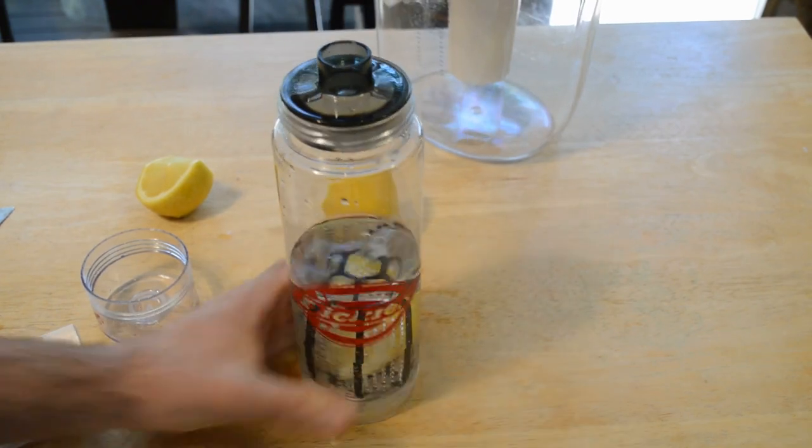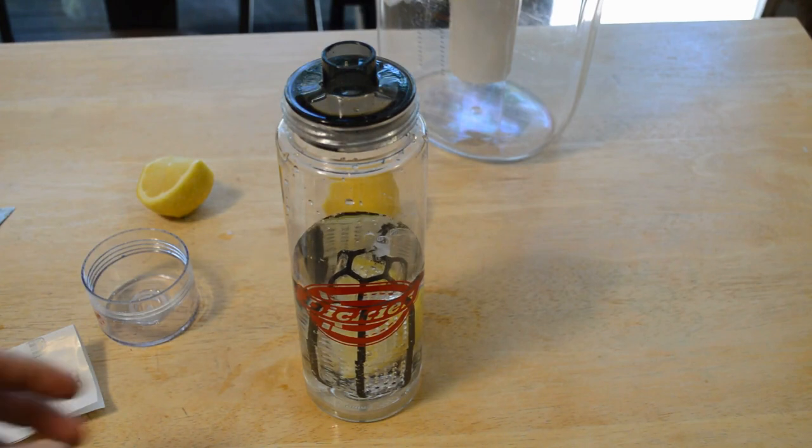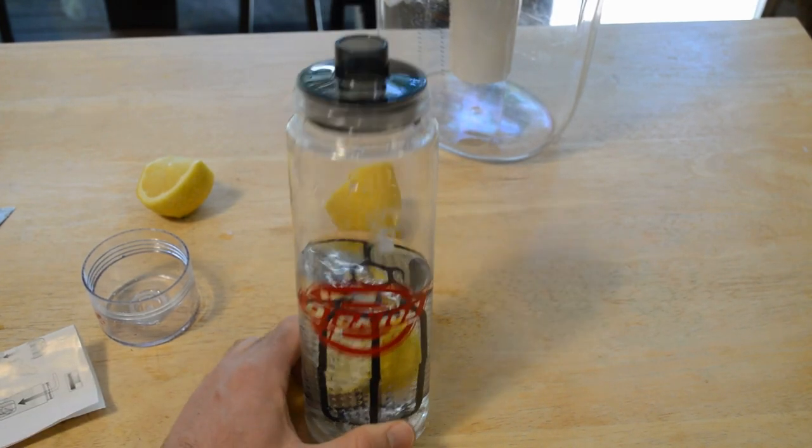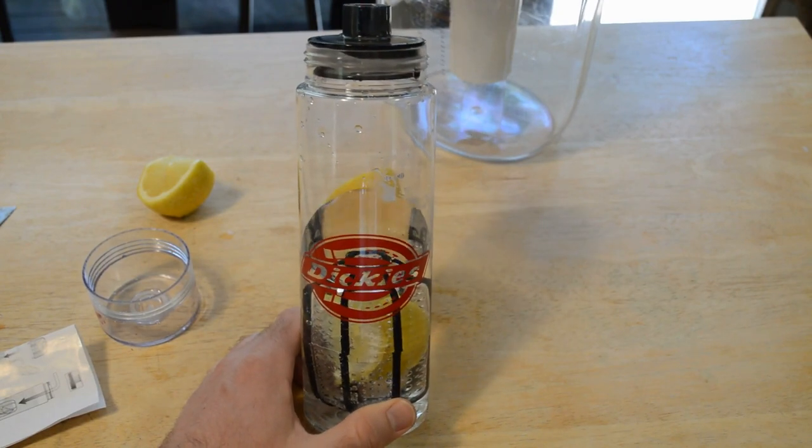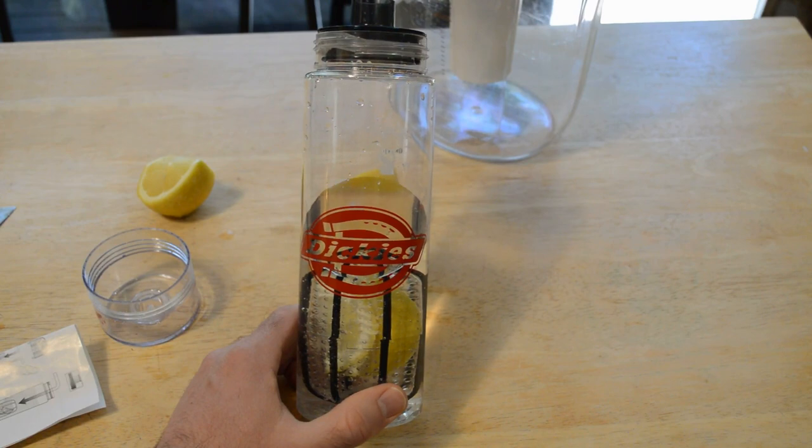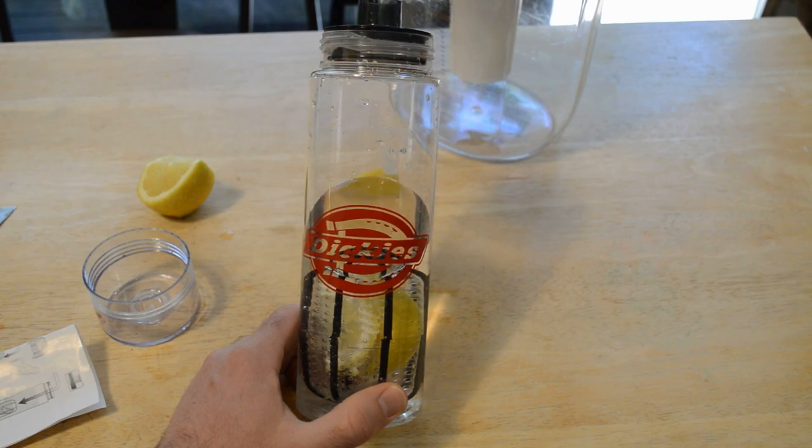Alright, so do I recommend the Dickies water bottle? The answer is I'm on the fence, leaning towards no, and I'll tell you why. It's not dishwasher safe. The chamber is plastic with little rubberized coating on the outside, so I don't know what that rubberized coating is made out of. As you're shaking it, I could see some of that coating kind of coming off and into your water, so I wouldn't want that.